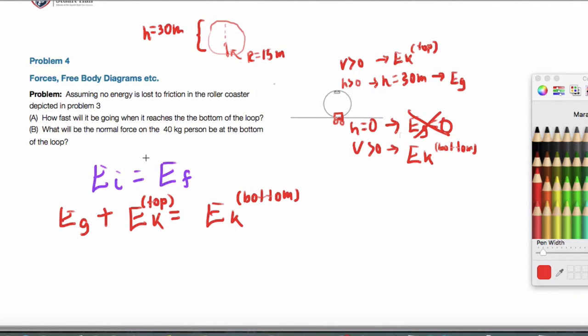All right, so now I can plug in my formula. So formulas that I would give you, you will be given the fact that Eg is mgh and that Ek is one-half mv squared. That I will give you.